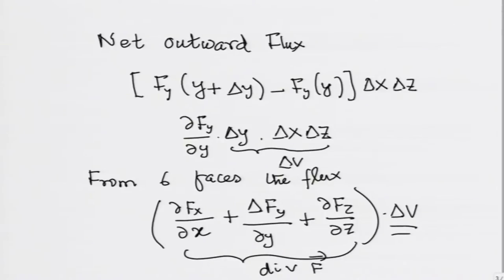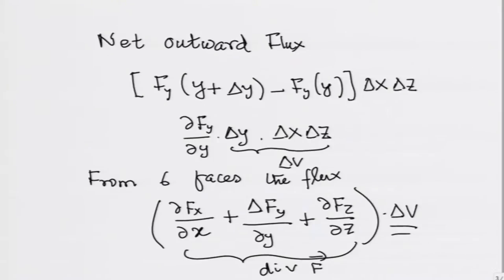My definition of divergence was to divide the surface integral by delta V and take the limit. The limit has already been taken in some sense when I kept only the first term of the Taylor series. Therefore, the definition I gave you is the same as the familiar definition of divergence: div F = dF_x/dx + dF_y/dy + dF_z/dz. That is the original, if you like, geometrical definition of the divergence.